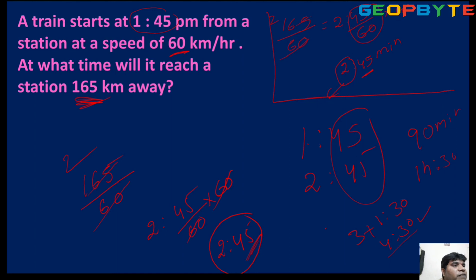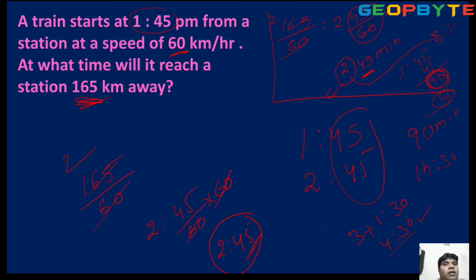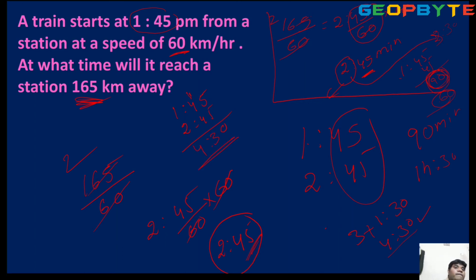Add 2 hours 45 minutes to the departure time of 1:45 PM. 1:45 + 45 minutes = 90 minutes past 1:00, which is 2:30 PM. Then add the 2 hours: 2:30 + 2 hours = 4:30 PM. So the answer is 4:30 PM. In another method: 1:45 plus 2 hours 45 minutes — minutes give 45+45=90; since 90 > 60, carry 1 hour and keep 30 minutes; hours give 1+2+1=4. Answer: 4:30 PM. Three methods have been explained — observe clearly.